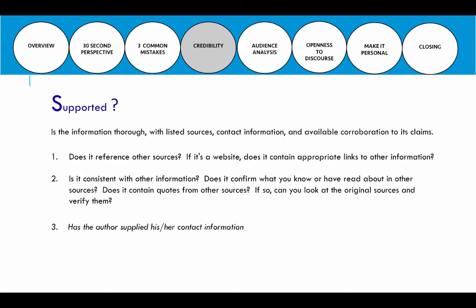The S — supported — means asking whether the source has contact information and any way to corroborate its claims. Does it reference other sources? If it's a website, does it contain appropriate links to other information? And is it consistent with that other information? If you've researched 15 articles and 14 say one thing, but one article says something completely different, that should be a red flag. Pause and consider it may need more corroboration, and remove that information if it is indeed problematic.